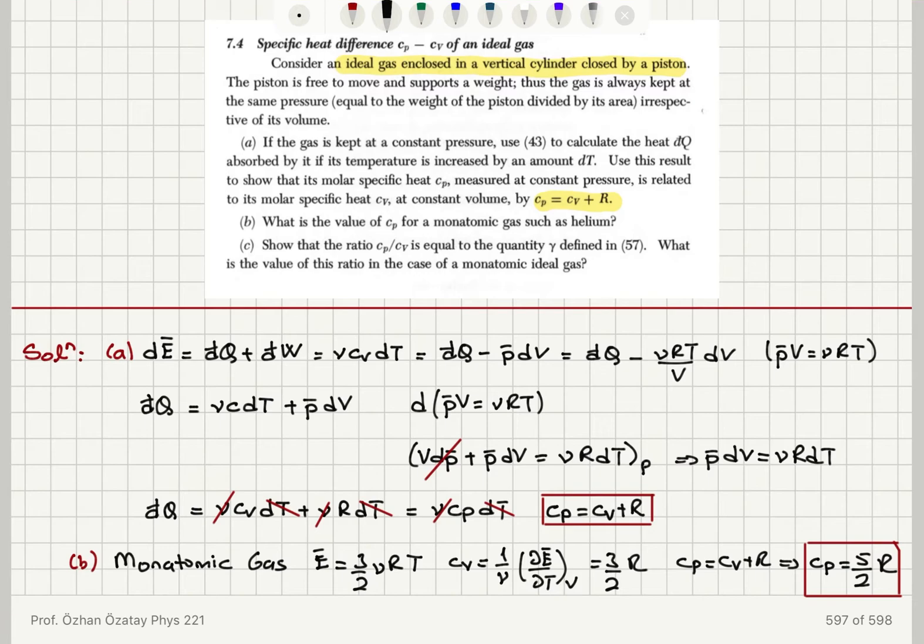We are considering an ideal gas in a vertical cylinder which is kept at a constant pressure. We have p bar is equal to mass of the piston or weight of the piston mg divided by perpendicular area A. This is a constant, so this is a constant pressure process.